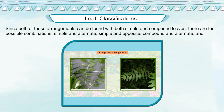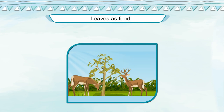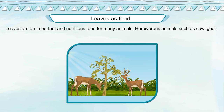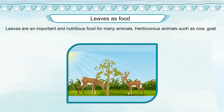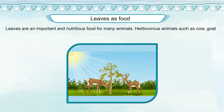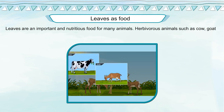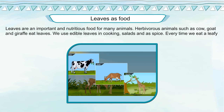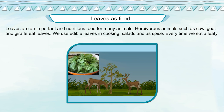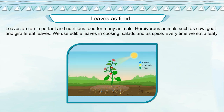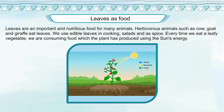Since both arrangements can be found with both simple and compound leaves, there are four possible combinations: simple and alternate, simple and opposite, compound and alternate, and compound and opposite. Leaves are also an important and nutritious food for many animals. Herbivorous animals such as cow, goat, and giraffe eat leaves. We use edible leaves in cooking, salads, and as a spice.